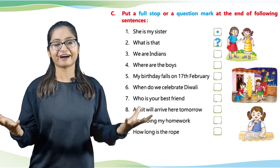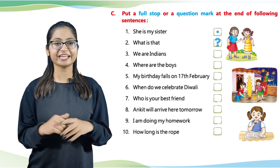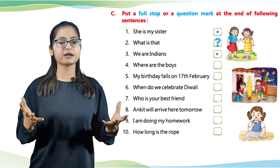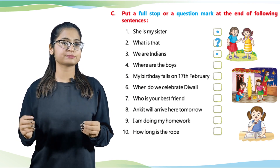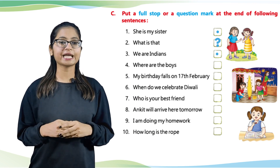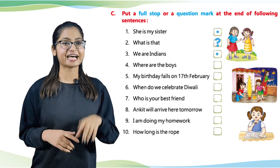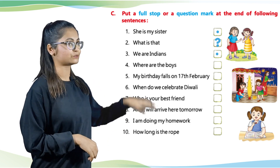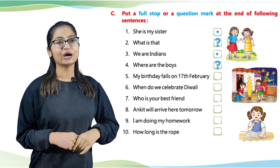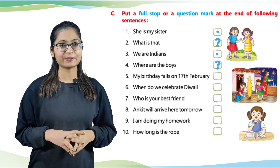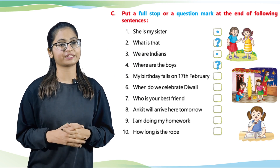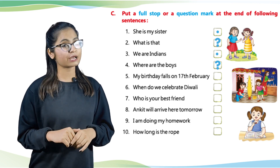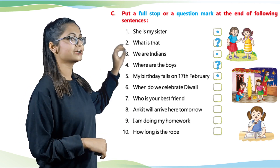Number 4: We are Indians — say it proudly! We will put a full stop. Number 5: Where are the boys? You have to put a question mark. Number 6: My birthday falls on 17th February. You have to simply put a full stop.